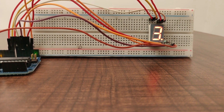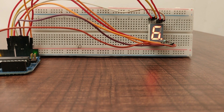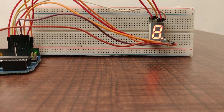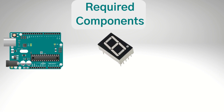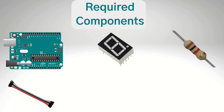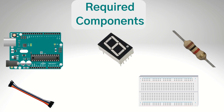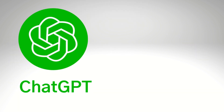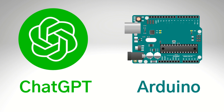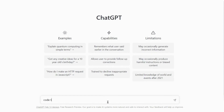Now we will count from 0 to 9 on a 7-segment display using Arduino and ChatGPT. The required components are Arduino UNO, 7-segment display, a 220 ohm resistor, jumper wires, and a breadboard. We will generate code by using ChatGPT and run it into Arduino IDE. Open ChatGPT from chat.openai.com and type: code to count 0 to 9 in 7-segment using Arduino.